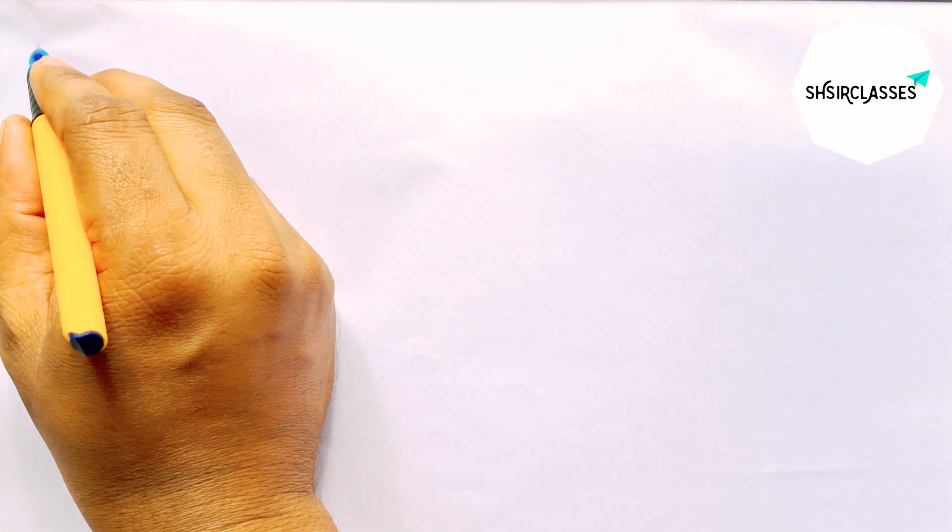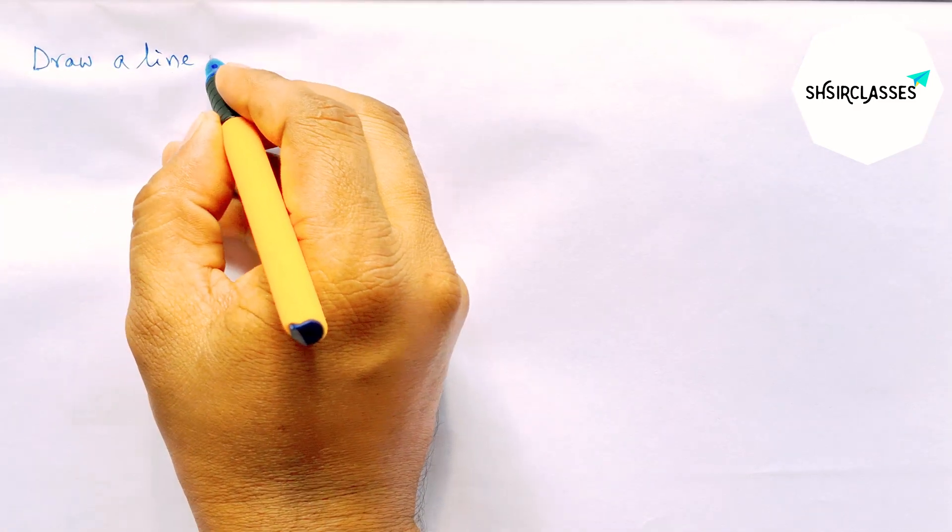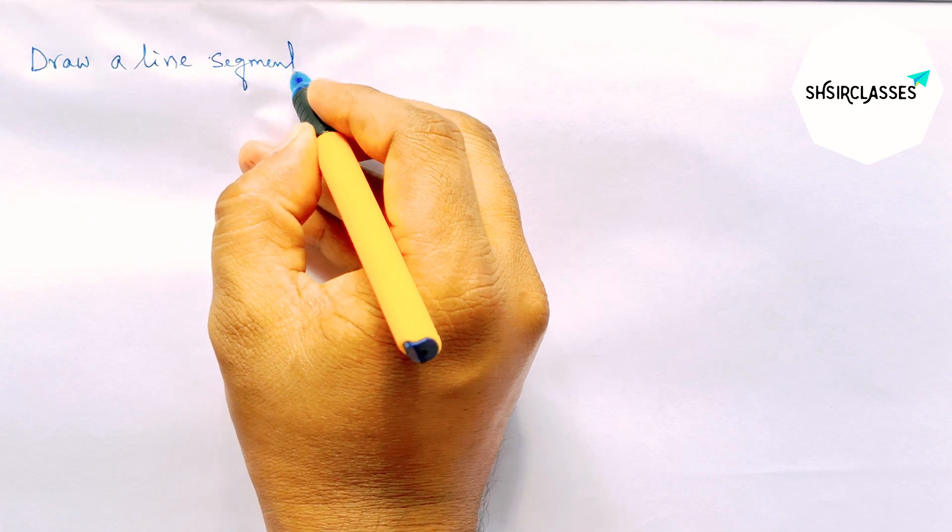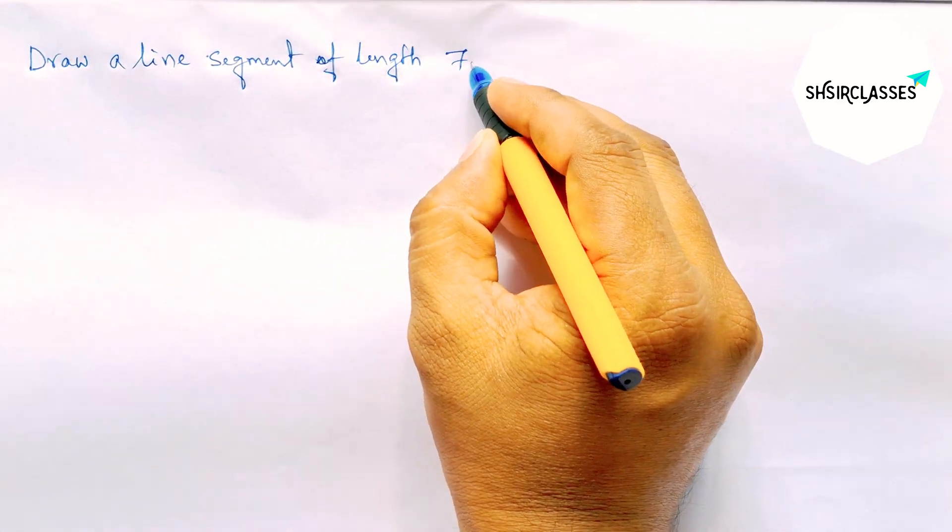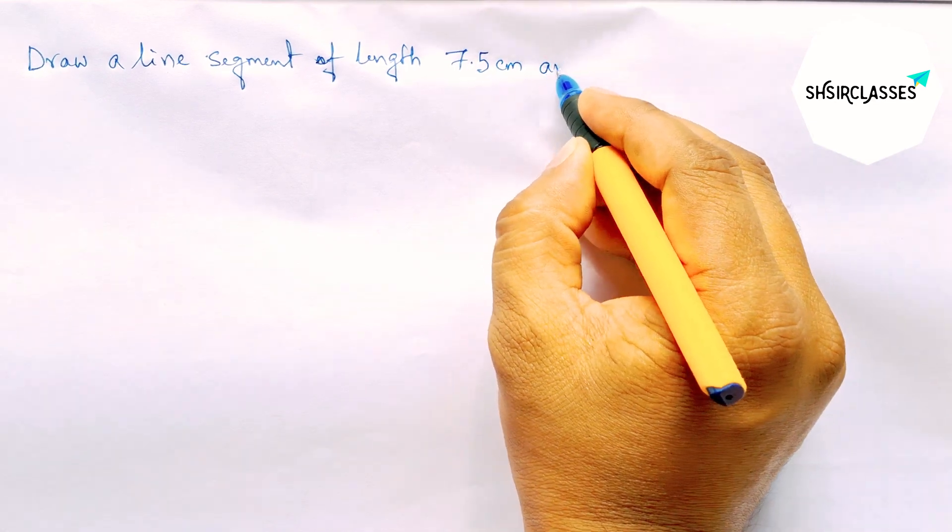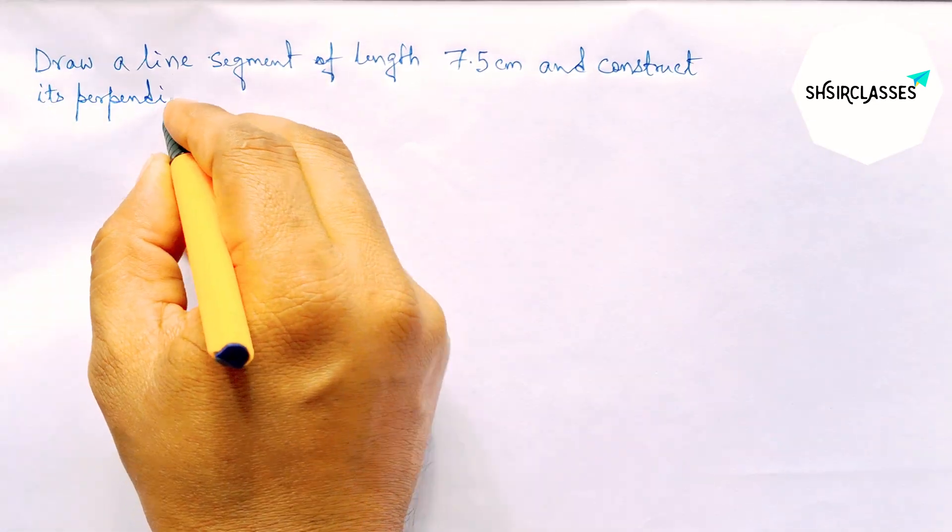Hi everyone, welcome to SA Share Classes. Today in this video, draw a line segment of length 7.5 cm and construct its perpendicular bisector to the line segment AB in easy way.